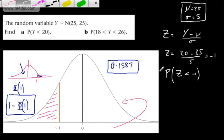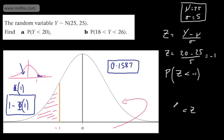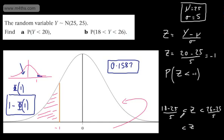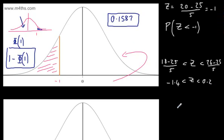Now for part B, we make the substitution directly into the inequality. We place z in the middle, with 18 minus 25 divided by 5 on the left, and 26 minus 25 divided by 5 on the right. This gives us the probability that z is between minus 7 over 5, which is minus 1.4, and 1 over 5, which is 0.2.